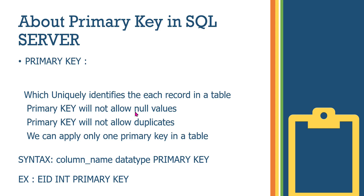Primary key will not allow null values, and primary key will not allow duplicates. Just like a roll number, employee ID, or mobile number — all must be unique. We can apply only one primary key in a table.